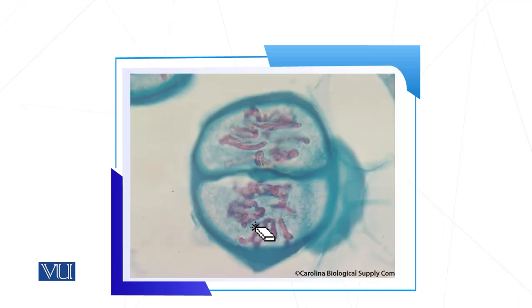In the third slide, you can see two daughter cells as a result of meiosis 1. From all the discussion, we can clearly identify the different stages of meiosis and whether they belong to meiosis 1 or meiosis 2. Keep in mind the mechanism of crossing over, recombination, and the alignment of sister or non-sister chromatids to identify these stages. I hope you can now identify different stages of meiosis in the permanent slides.